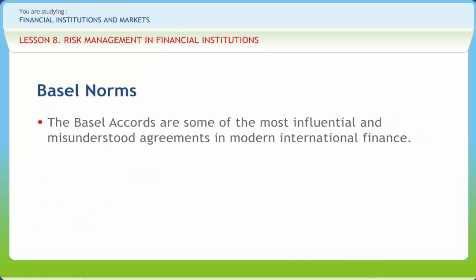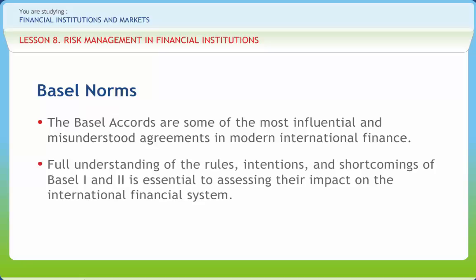The Basel Accords are some of the most influential and misunderstood agreements in modern international finance. A full understanding of the rules, intentions and shortcomings of Basel 1 and 2 is essential for assessing their impact on the international financial system. The objectives of Basel norms are to promote safety and soundness in the financial system, to ensure capital adequacy is sensitive to the level of risk borne by banks, to constitute a more comprehensive approach to addressing risks, and to continue to enhance competitive equality.